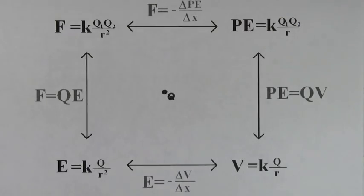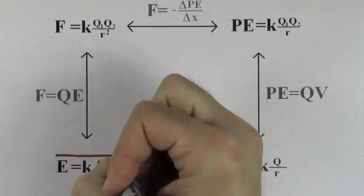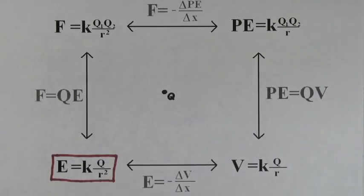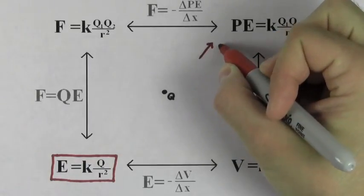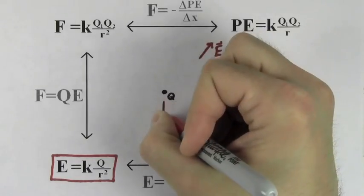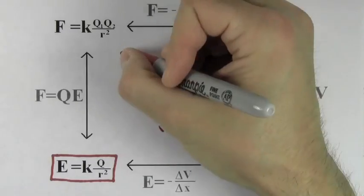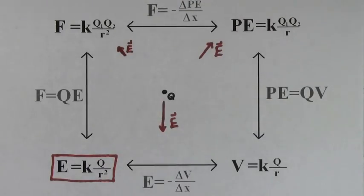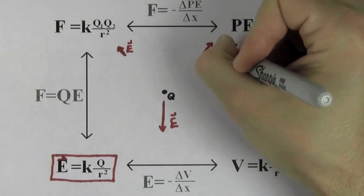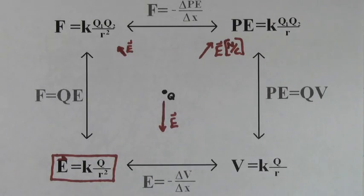Say you put down a point charge Q. It's going to create an electric field at every point in space around it. If the charge is positive, the electric field is going to point radially outward from the charge. The units of electric field are newtons per coulomb because it tells you how many newtons of force there would be on a one coulomb charge placed at that point.